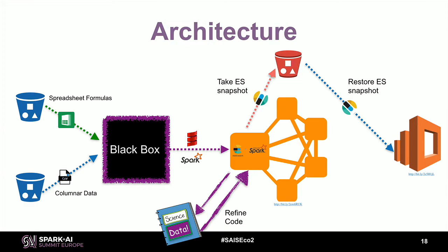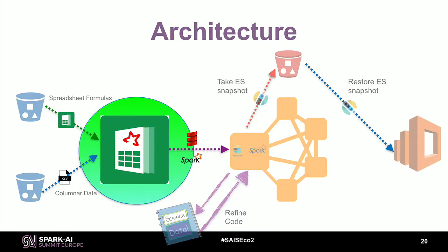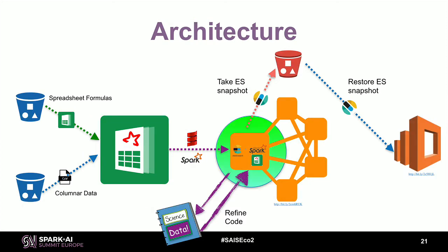I'll discuss the architecture briefly — just two or three slides. We start with a spreadsheet dataset that has formulas and columnar data. There's a black box that gives us code running on a Spark cluster, which also has Elasticsearch running inside it so we can index code, take a snapshot, and restore it on an Elasticsearch service or cluster. That black box is what we've developed — we call it SparkSheet — and it runs inside the Spark cluster, specifically inside the driver node.